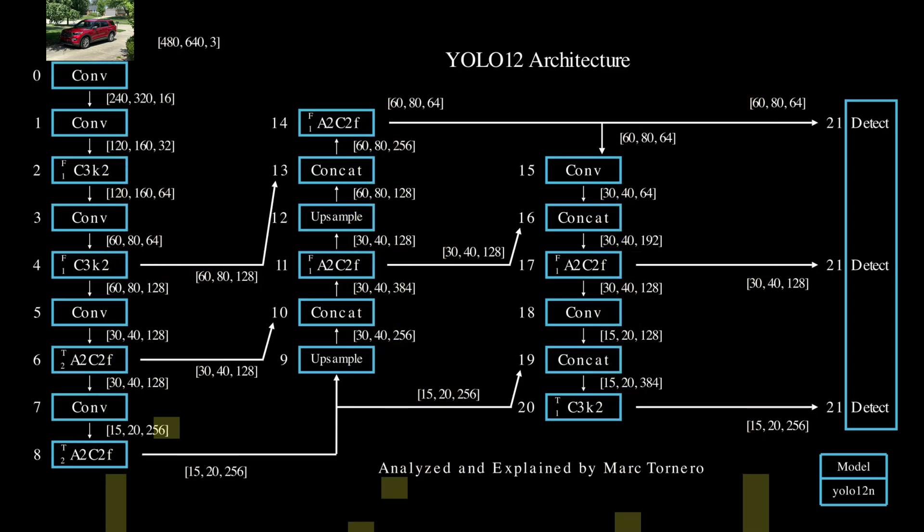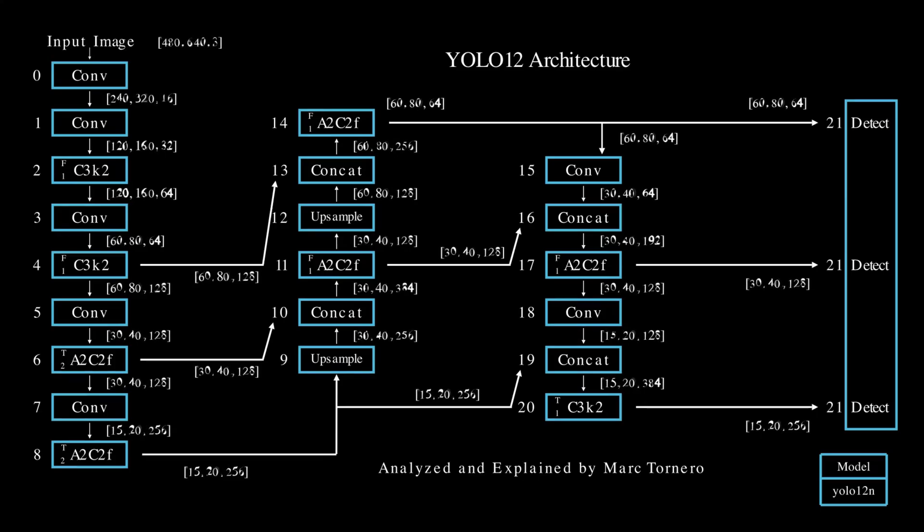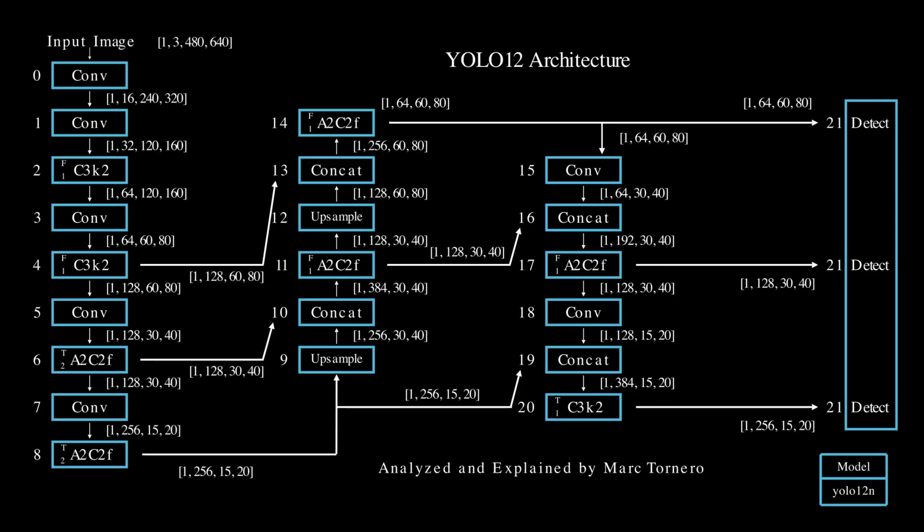These are the exact dimensions for our YOLO12 nano model with this specific input image shape. To better align with the format used by PyTorch, we will reorder the dimensions from height, width, channels to batch, channels, height, and width. With that, we are ready to continue our exploration.